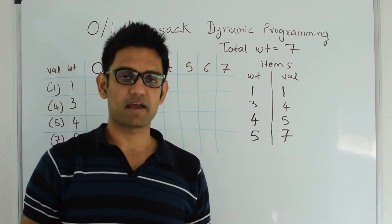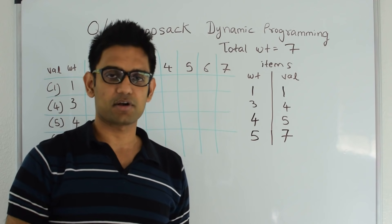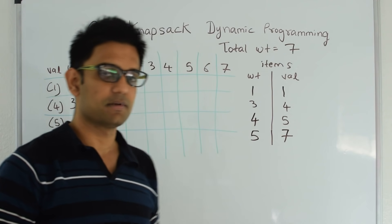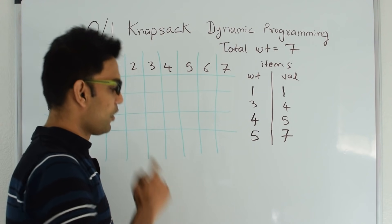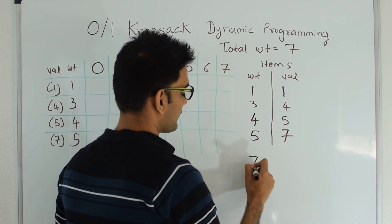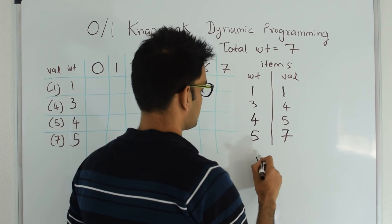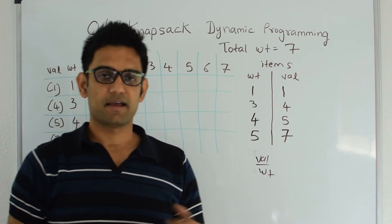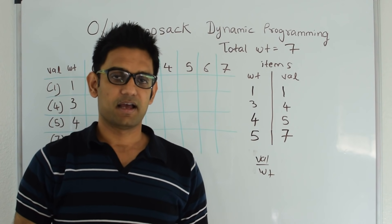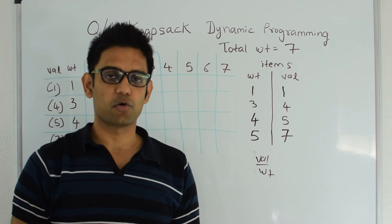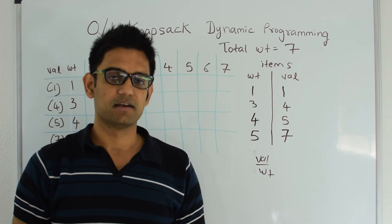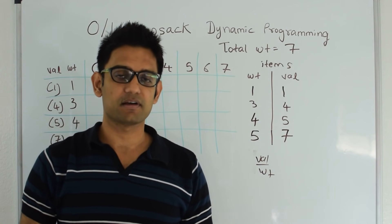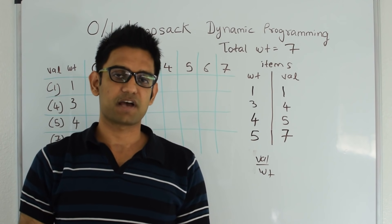0-1 means that either you pick the item or you don't pick the item — you cannot split the item. If it was not a 0-1 knapsack problem, say you could split the item, there's a greedy solution: sort the items by value-to-weight ratio in non-increasing order, keep picking items, and if the last item cannot be picked totally, split it and pick whatever ratio you can. But here we are doing 0-1 knapsack, so we cannot split the item. We will use dynamic programming to solve this.